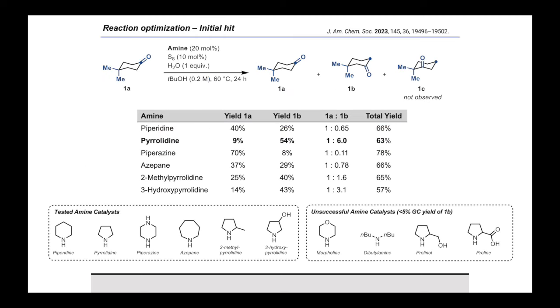With this in mind, we initiated our screening efforts focusing on 4,4-dimethyl cyclohexanone and conditions involving catalytic amounts of sulfur, one equivalent of water, tert-butanol as a solvent, 60 degrees and a reaction time of 24 hours. Initially, investigating different amine catalysts, we found that many secondary amines are able to catalyze the desired transformation with pyrrolidine performing the best in terms of getting close to the desired equilibrium distribution between 1A and 1B. Interestingly, 1C could not be observed in the reaction conditions.